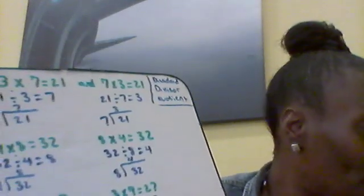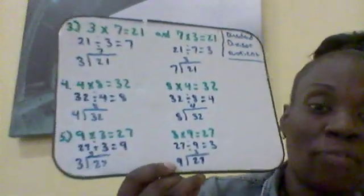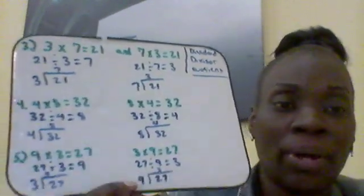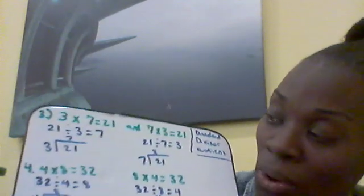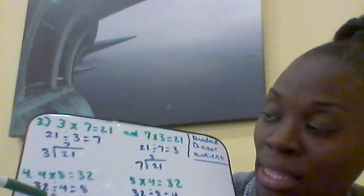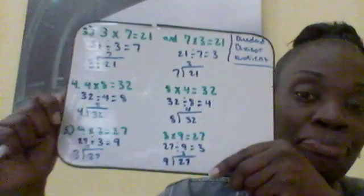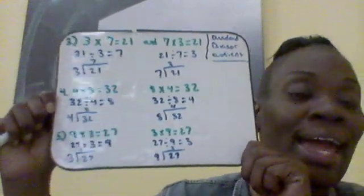We'll do a few more practice problems tomorrow. You can practice independently by having your dad set it up the same way — multiplication factors on top, then division written both ways: using the division sign and also using the bracket. Because you can see it either way, and the answer is still the same.